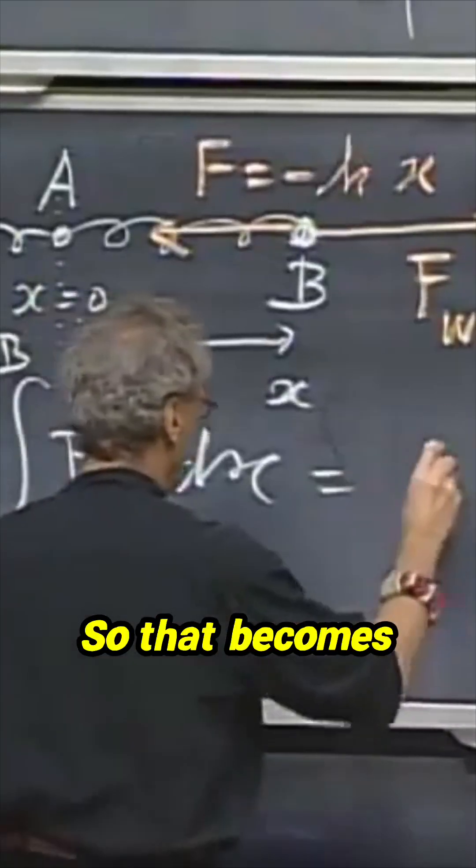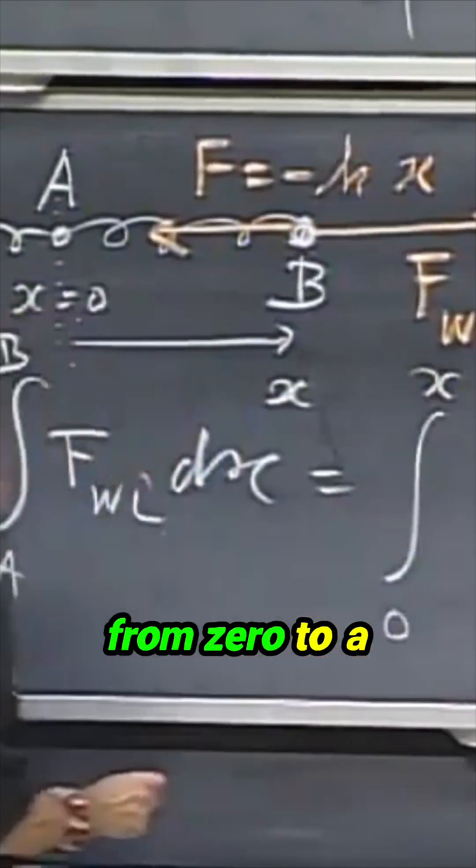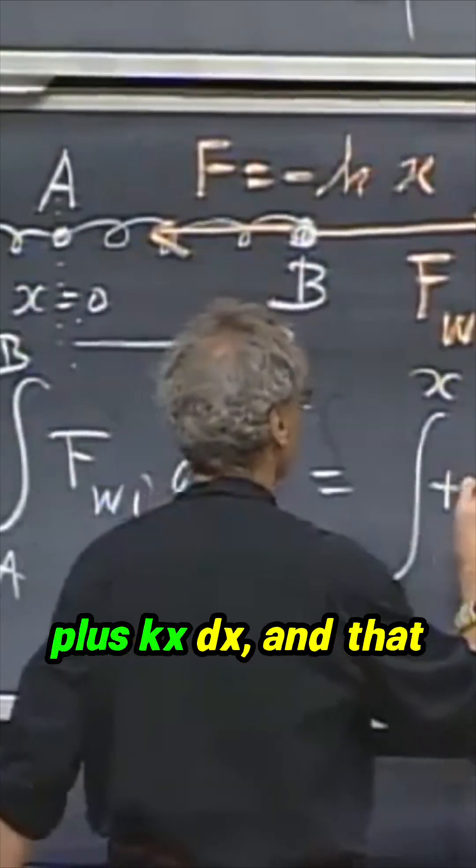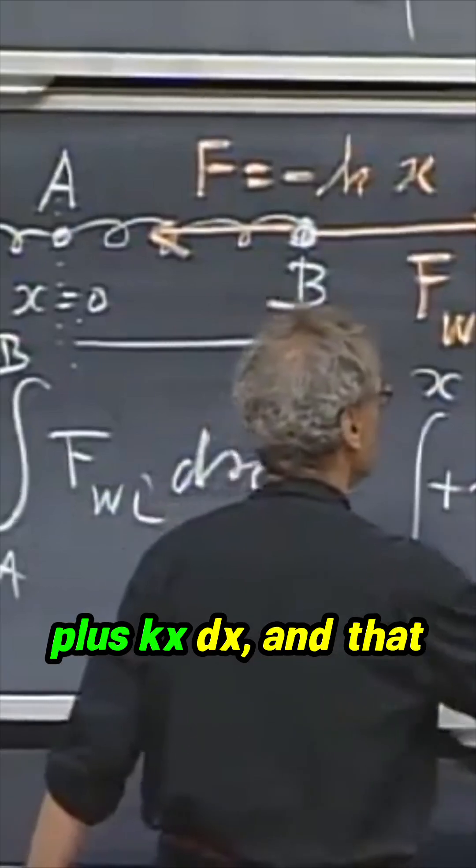So that becomes the integral in going from zero to a position x of plus kx dx.